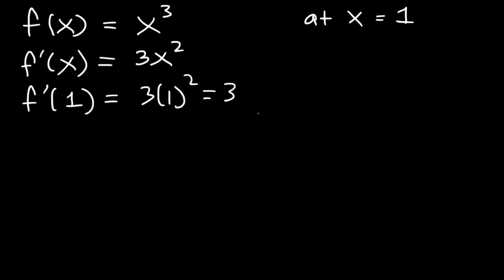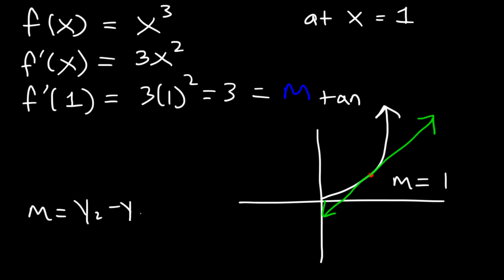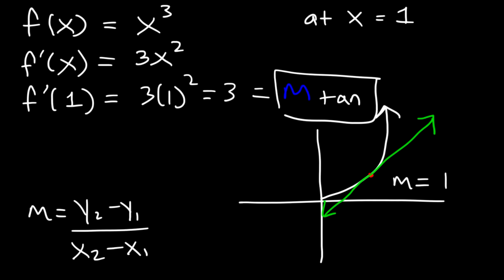This value represents the slope of the tangent line. So let's say if we graph x cubed — focusing on the right side. At x equals 1, if we draw a line that touches the curve at one point only, that's the tangent line. The slope of that line is equal to 1. Recall that slope is basically the rise over the run — you calculate the slope by dividing the change in y by the change in x. So the slope of the tangent line at a point is the same as the instantaneous rate of change, which for this example is equal to 3.